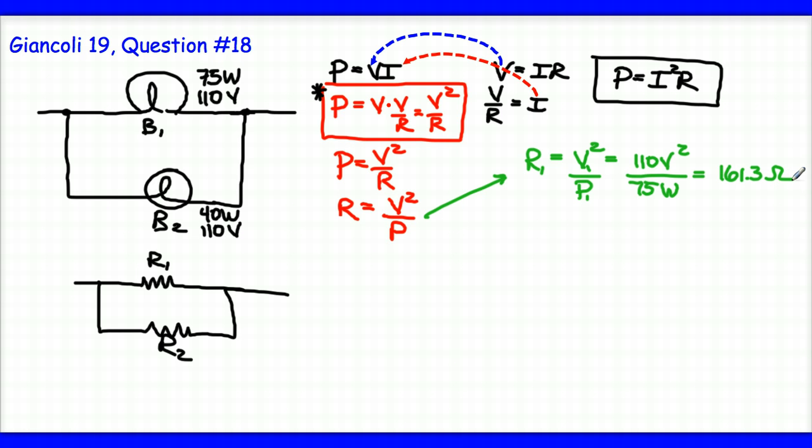If I were to do the same thing for the second bulb, it's going to be very similar. I'll just simply say that R2 is 110 volts squared divided by the 40 watt rating, and that's going to give me something a bit higher - I'm going to get 302.5 ohms.